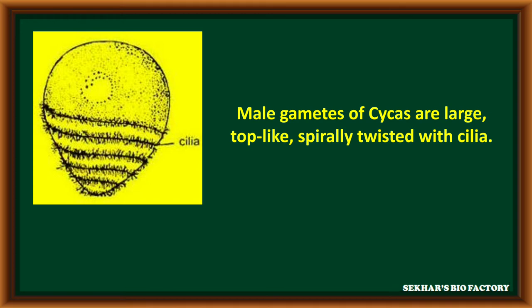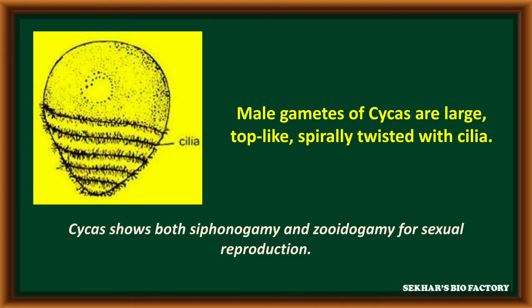The male gametes of Cycas are large in size, top-like and spherically twisted with a number of cilia. Cycas shows siphonogamy and zoidogamy of sexual reproduction. The male gamete reaches the female gamete with the help of a pollen tube, which is called siphonogamy. The motile male gametes fusing with the non-motile female gamete is called zoidogamy.